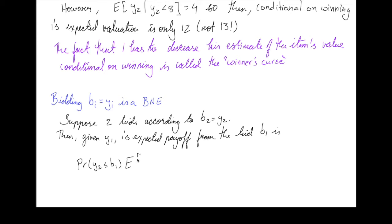And if player 1 wins, their expected payoff is the expected value of Y1 plus Y2, which is a valuation of the item, minus B1, which is what bidder 1 is bidding for the item and would have to pay, conditional on Y2 being less than B1. If Y2 is bigger than B1, then player 1 gets 0 payoff because they lose the auction. So with the probability Y2 bigger than B1, they get payoff 0. So the sum of these two is the expected payoff of player 1 if they bid B1. Since the second term is 0, we won't worry about that, and we'll start simplifying this thing.